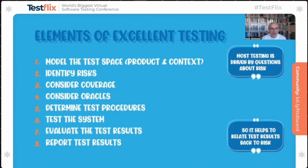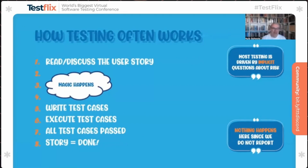If I look at excellent testing, it starts with modeling the product and the context — your testing space. Then you identify risks using the value of the application. Knowing the application and those risks, you consider coverage: where do I want to learn more? Then you consider oracles — means to recognize problems. Then you determine your test procedures, execute, look at results, and report. Reporting isn't writing a report; it's talking about your test results and making sure your team has information to make informed decisions.